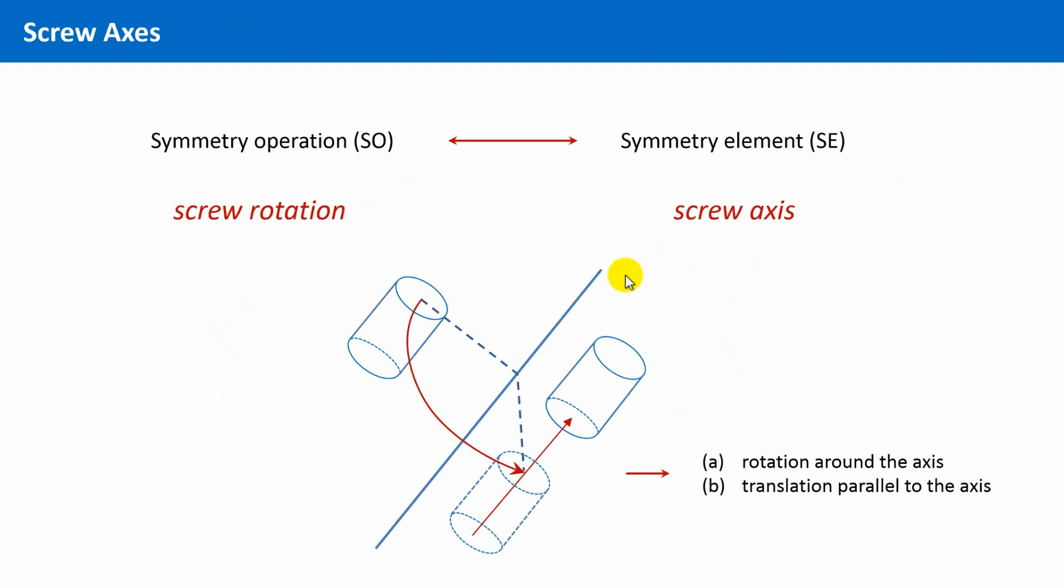The respective symmetry operation of this symmetry element is called a screw rotation. And this is a combined symmetry operation, in which you have to carry out two operations consecutively. First, a rotation around this axis, and then a translation parallel to this axis.